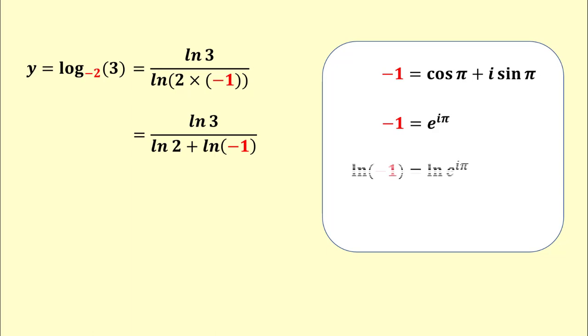Taking the natural log on both sides of this equation, we get natural log of negative 1 equals iota times pi, which is purely imaginary. Now, if we substitute the value of natural log of negative 1, we get y equals natural log of 3 upon the sum of natural log of 2 and iota times pi.